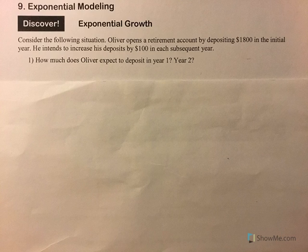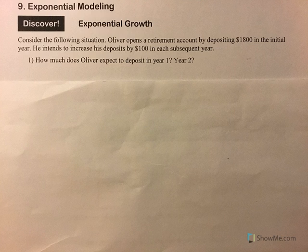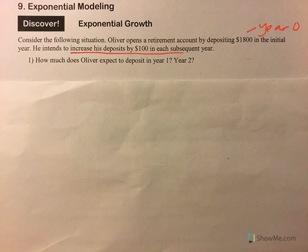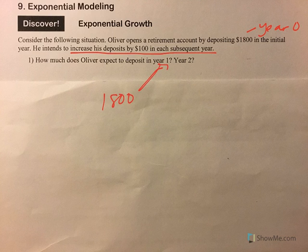Consider the following situation. Oliver opens a retirement account by depositing $1,800 in the initial year. He intends to increase his deposits by $100 in each subsequent year. So how much does Oliver expect to deposit in year one? We would call the initial deposit year zero. If he's going to increase his deposits by $100 each year, year one would be that initial deposit with an increase of $100, which would equal $1,900.